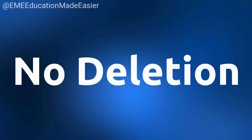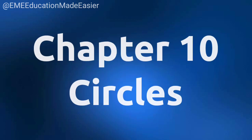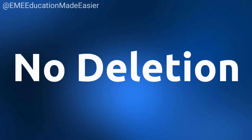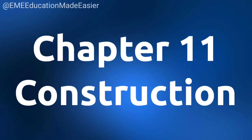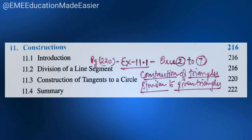Chapter number 10, Circles — no deletion, full chapter is coming. Chapter number 11, Construction. Construction of triangles similar to given triangles — exercise 11.1, page 220, from question 2 to question number 7, they are not coming.